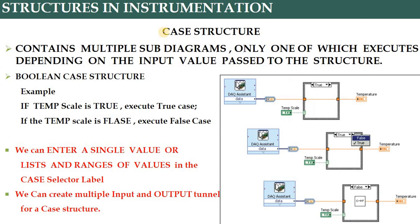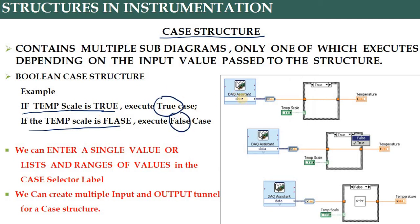Let's start with the case structure. As the name suggests, it handles a particular case: if A is there then output is B, if K is there then output is L. For example, if temperature scale is true — say above 50 degrees — execute one output; if temperature scale is false — below 50 degrees — execute another output. This is a kind of case statement.